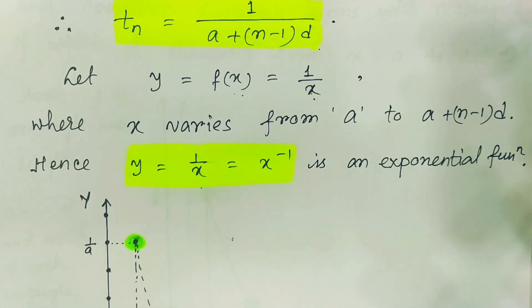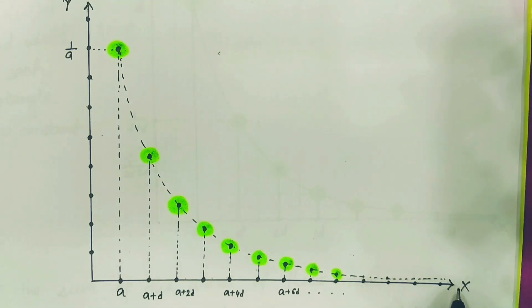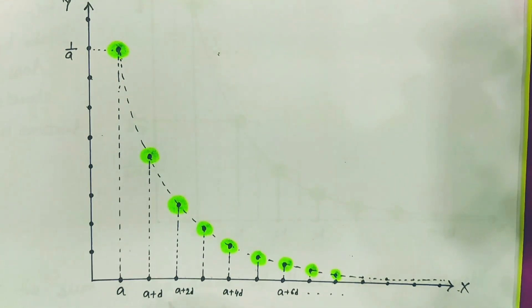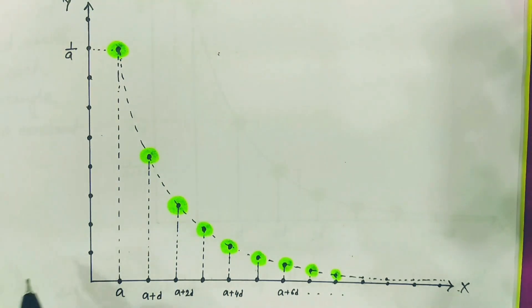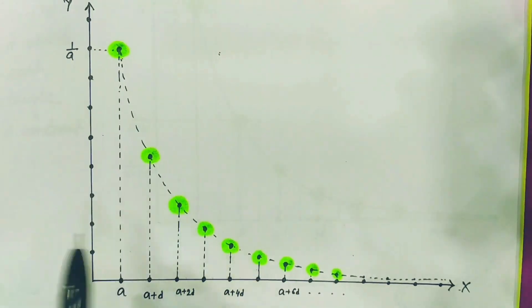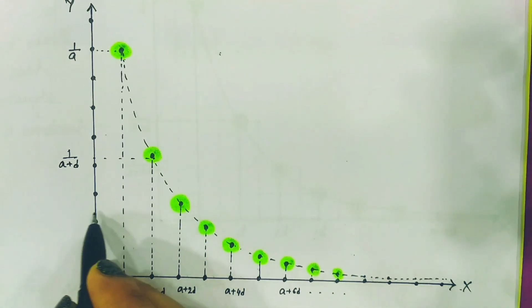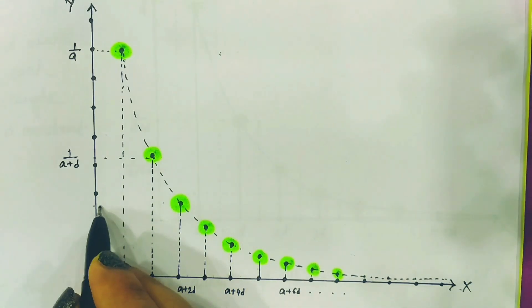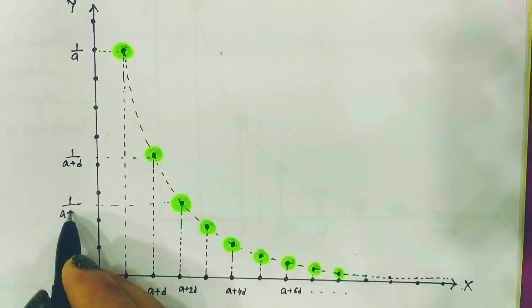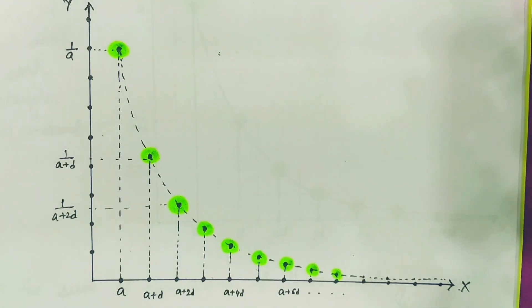If we plot this on the graph paper, on the x-axis we plot a, a+d, a+2d, and on the y-axis we plot the corresponding values 1/a, 1/(a+d), 1/(a+2d), and so on. The points trace out a hyperbolic curve — that is the graph for the corresponding HP.